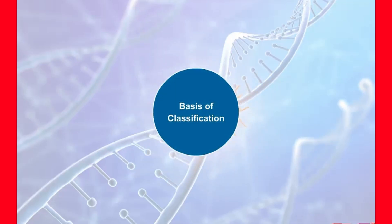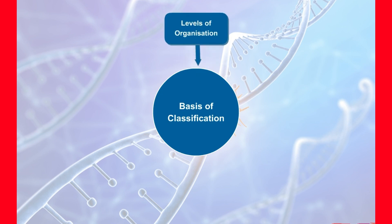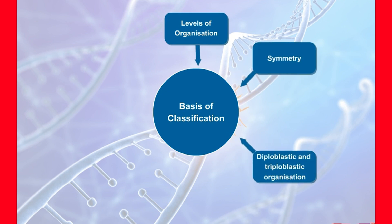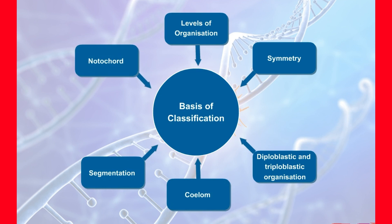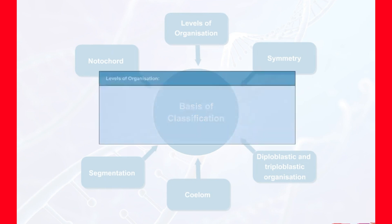Basis of classification: we can see a variety of animals around us; they all are of different shapes, colors, and habits. There is a need to classify them according to their habits and habitats. Classification of animals is based on several parameters which are as follows: levels of organization, symmetry, diploblastic and triploblastic organization, coelum, segmentation, and notochord.